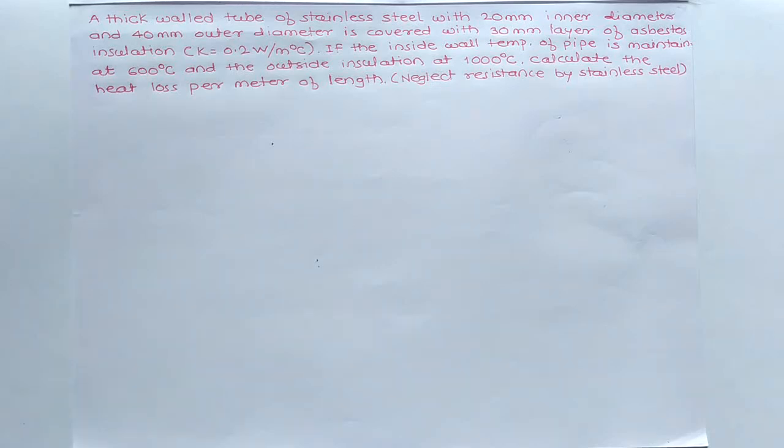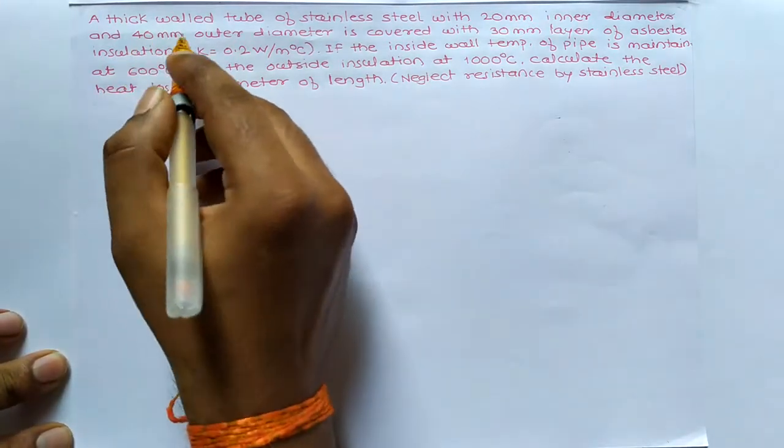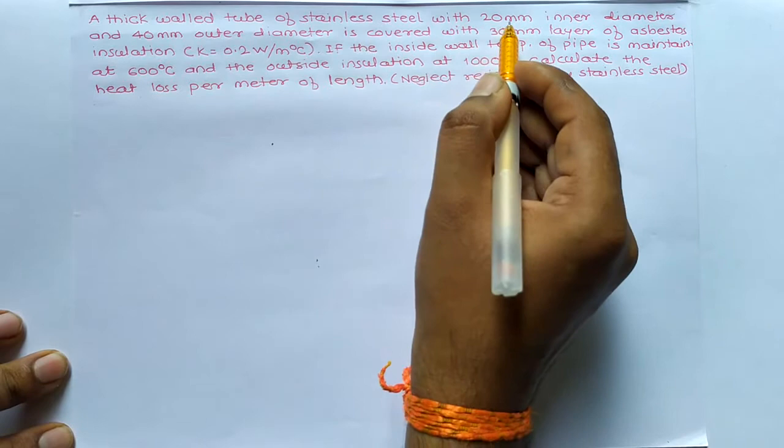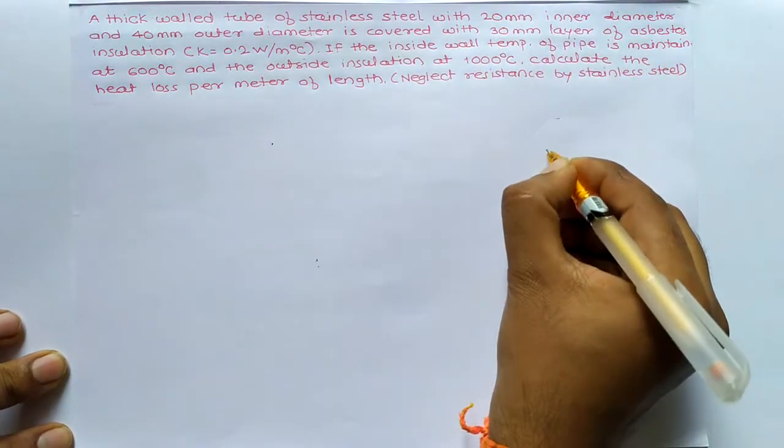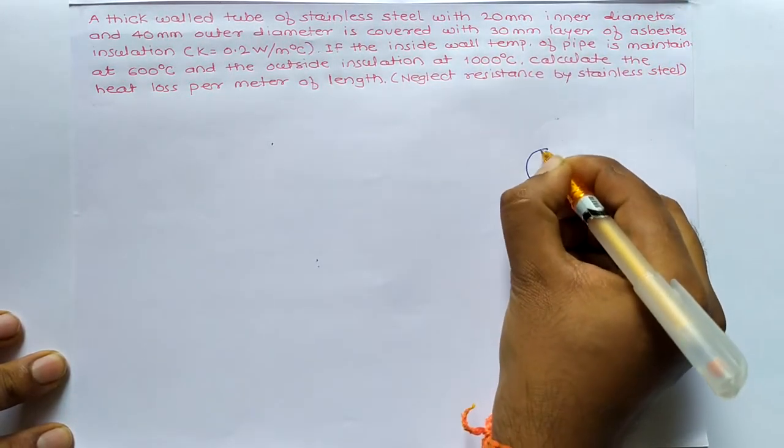A thick-walled tube of stainless steel with 20mm inner diameter and 40mm outer diameter. Now initially what you have to do? You have to plot the diagrams. A thick wall of stainless steel with 20mm inner diameter.